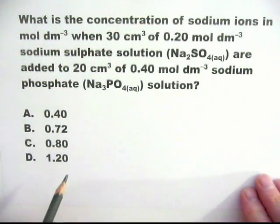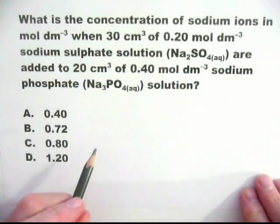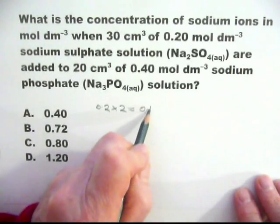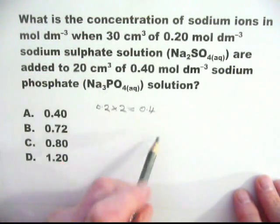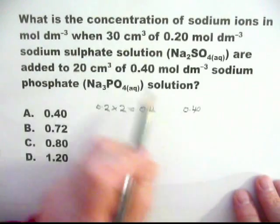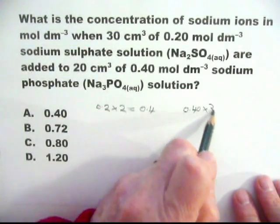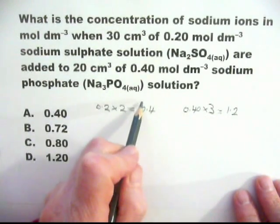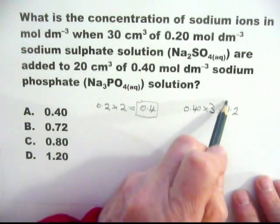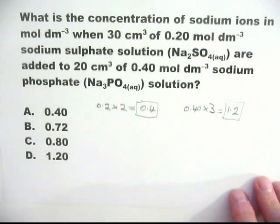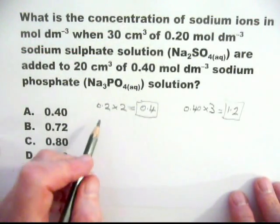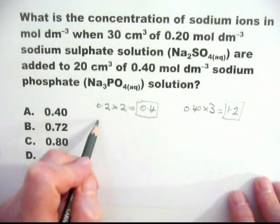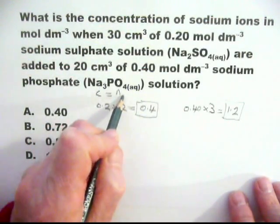So let's calculate the concentration of these ions. In the sodium sulfate it's 0.2 times 2 equals 0.4, and in the sodium phosphate it's 0.4 times 3 which equals 1.2. So we now have the values of N for the sodium ion. We are now going to use the two formulas: C equals N over V.